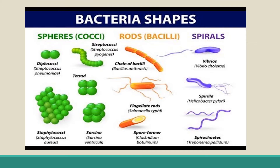Depending upon their shape, there are three subtypes of bacteria. Spherical bacteria are known as cocci. They may live singly as monococcus, or in groups like diplococci, which is two organisms. Staphylococci is a bunch of spherical bacteria. Streptococci are bacteria present in a chain. Tetra means four bacteria living together.